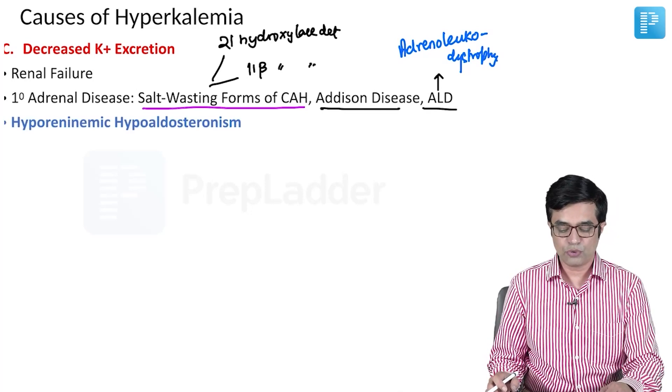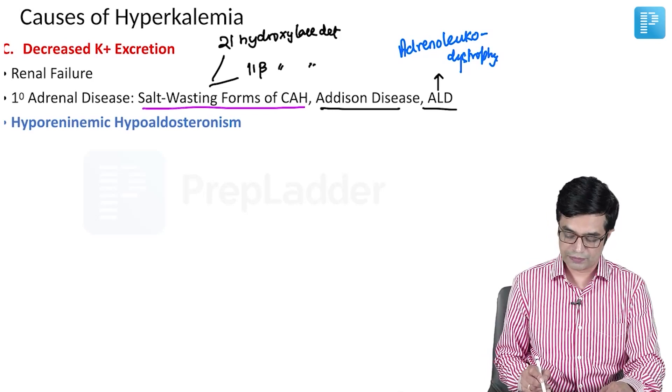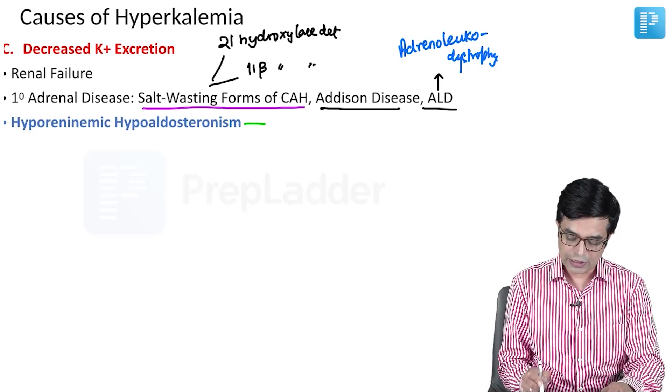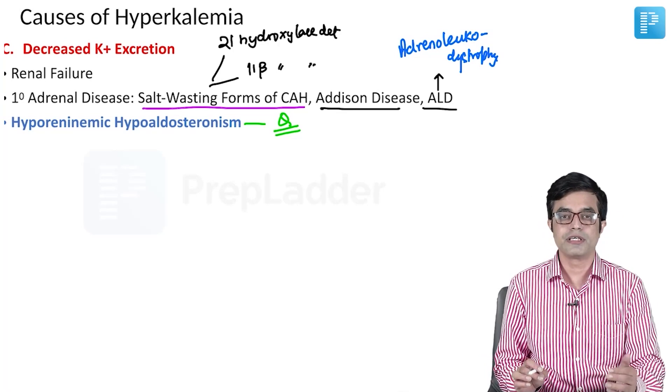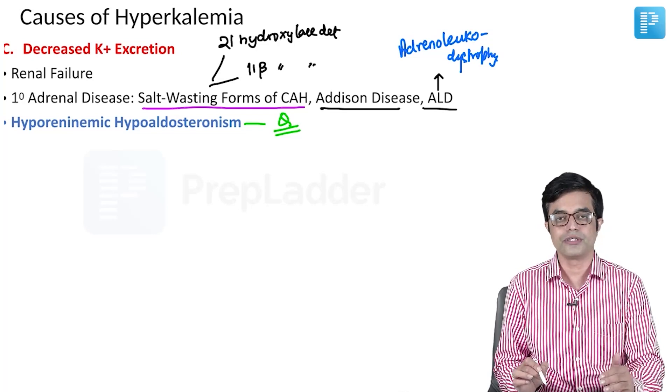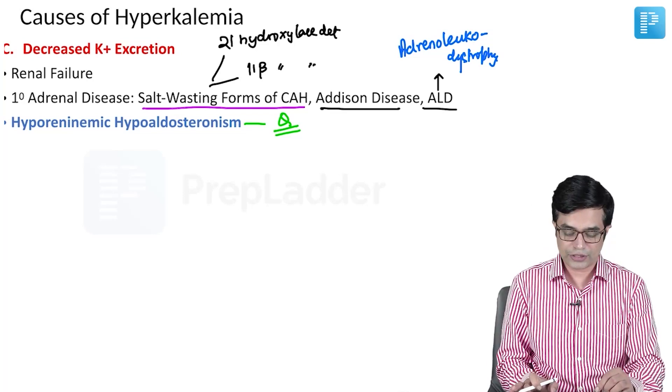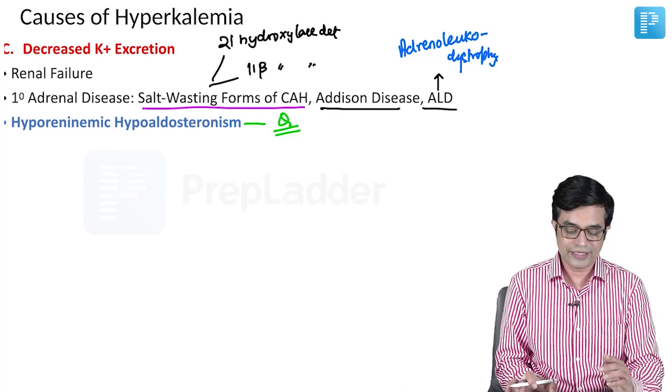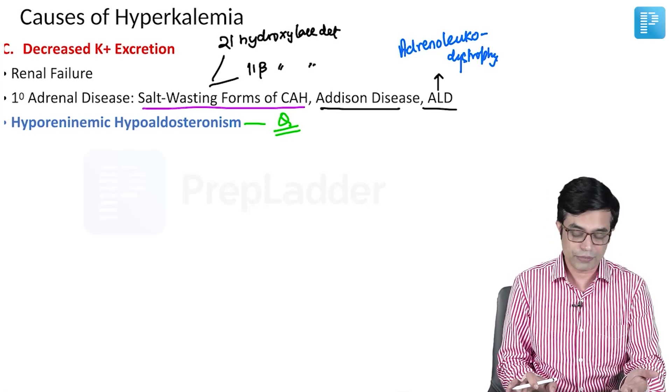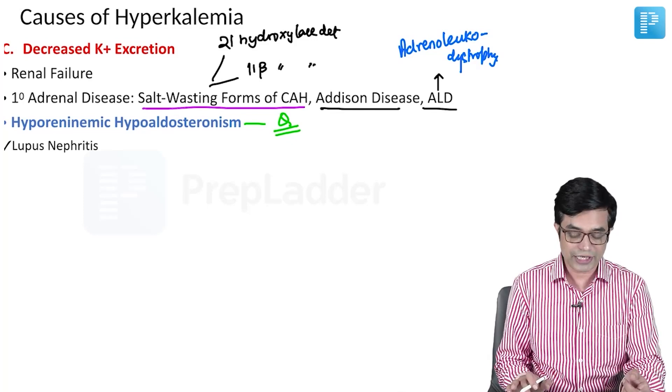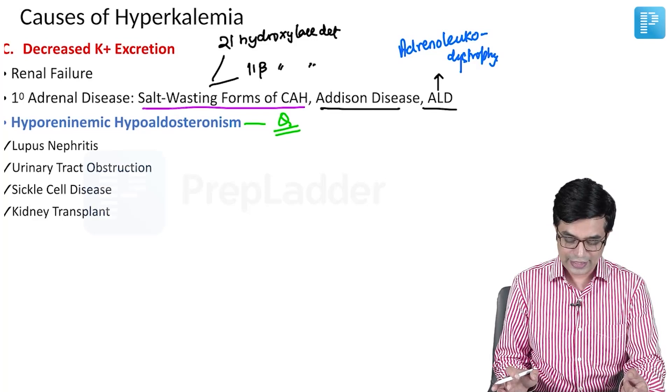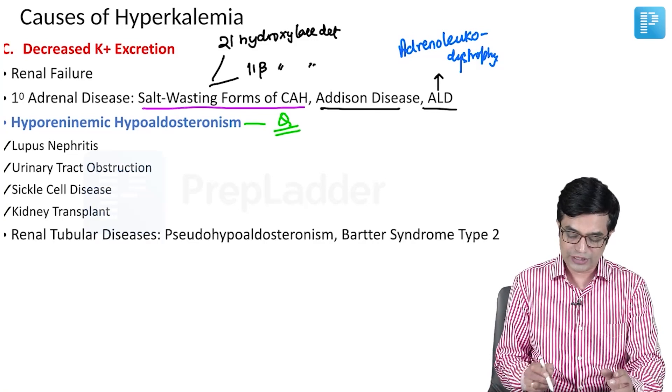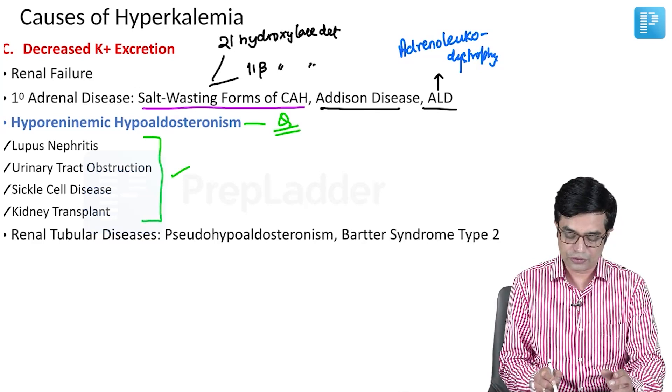It can be seen in hyporeninemic hypoaldosteronism. I have highlighted it because an MCQ on this has been asked in AIIMS entrance exam. What are the causes of hyporeninemic hypoaldosteronism? They will cause decreased potassium excretion leading to hyperkalemia. The causes include lupus nephritis, urinary tract obstruction, sickle cell disease, and post-renal transplant. These are the four important causes that you need to remember.